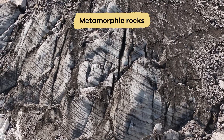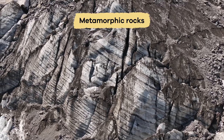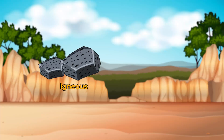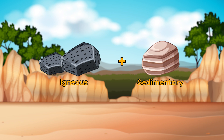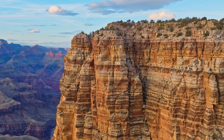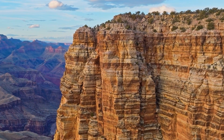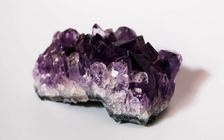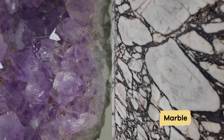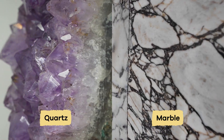Metamorphic rocks are the least common type of rock. They are formed from igneous and sedimentary rocks that have been transformed by intense heat and pressure over millions of years. These rocks often have ribbon-like layers and crystals in them. Stones like marble and quartz are examples.